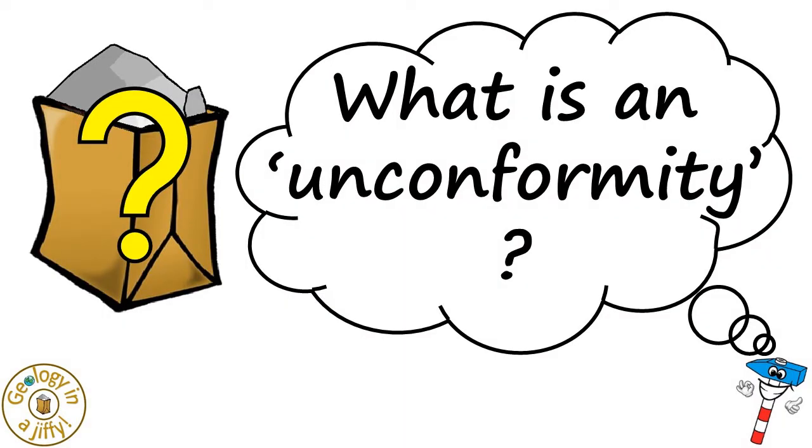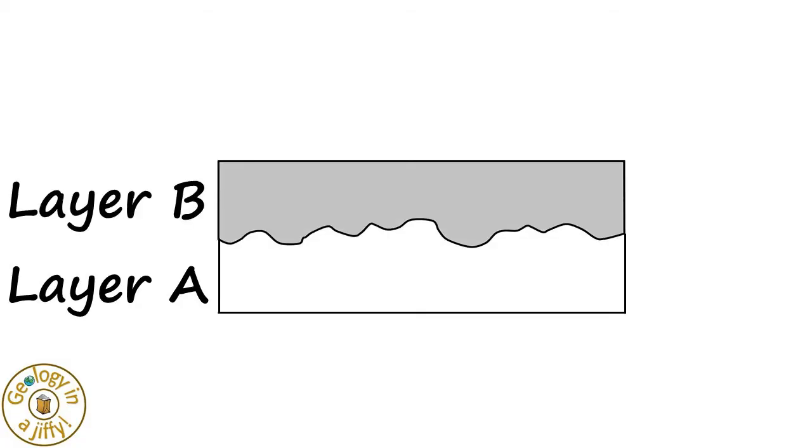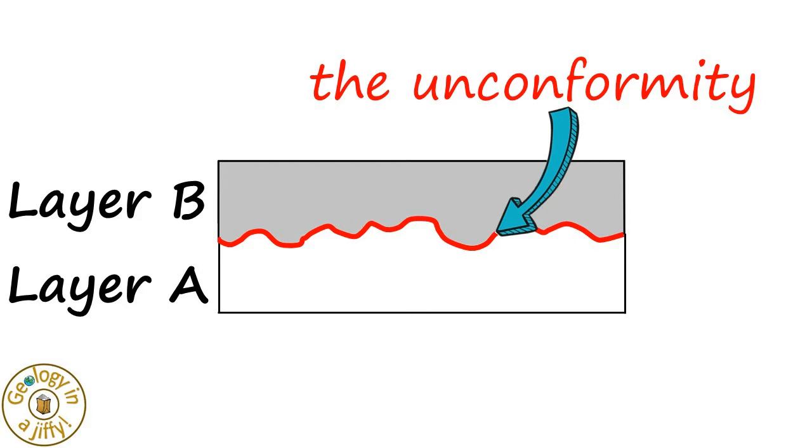In geology, an unconformity is the surface or contact between two groups of rocks, generally where a layer of sediment has been deposited over an older, pre-existing rock. In simpler words, imagine the white colored layer A being deposited first. This was then eroded. Sediment B, the grey sediment, was then deposited over it. The unconformity is simply the surface between layer A and layer B.